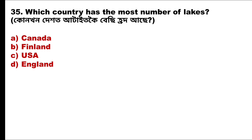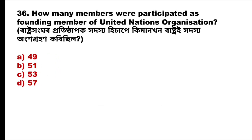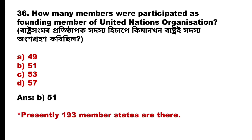Question 35: Which country has the most number of lakes? The answer is option A, Canada. Question 36: How many members participated as founding members of the United Nations Organization? The answer is option B, 51. Currently there are 193 member nations.